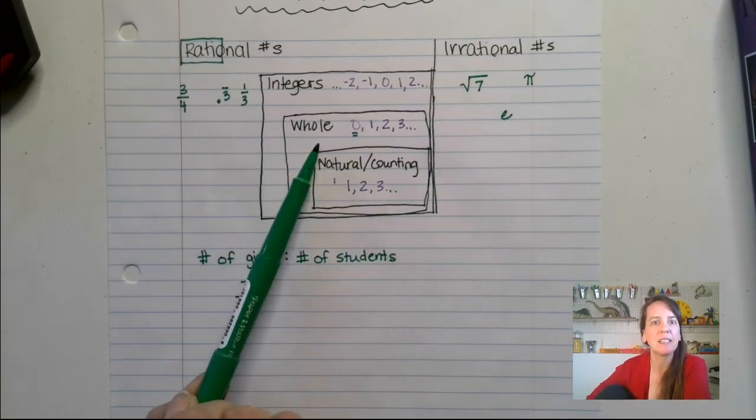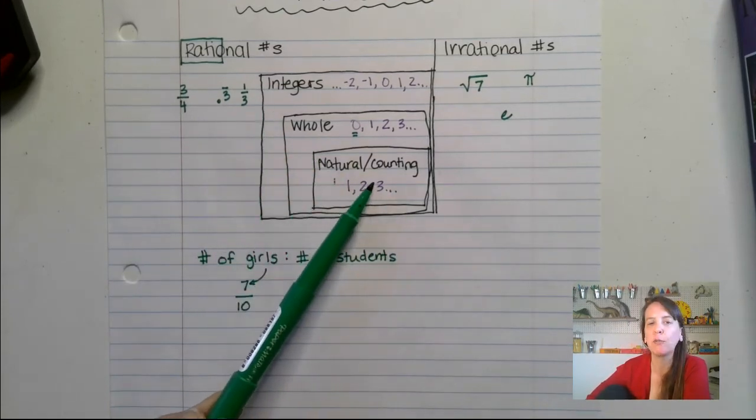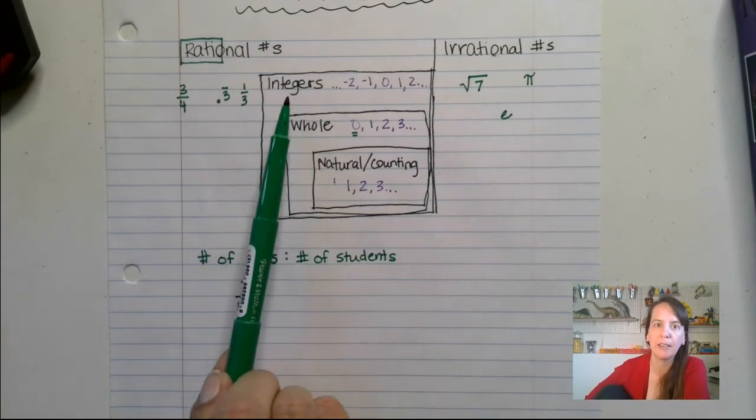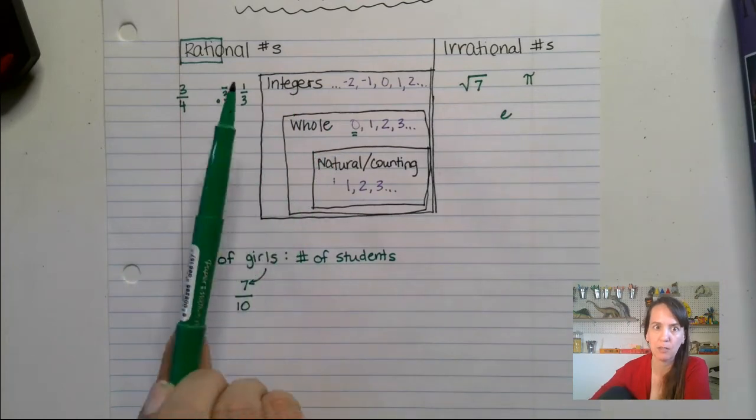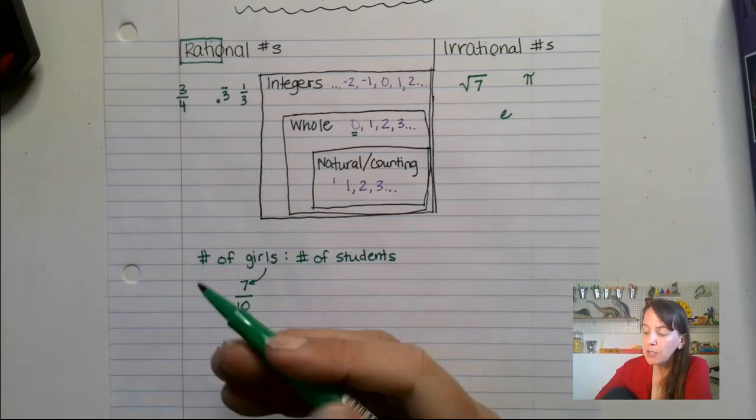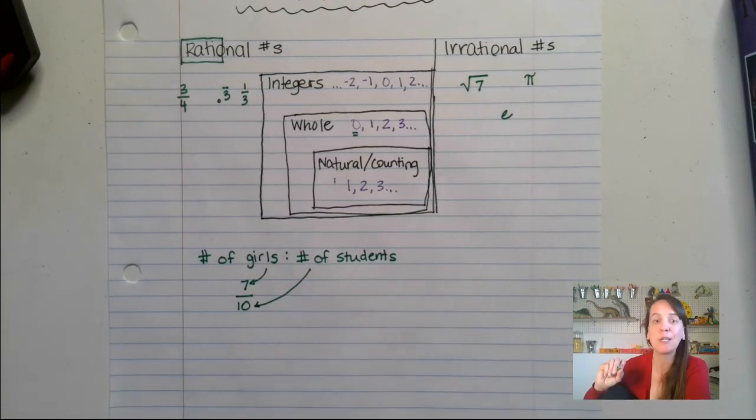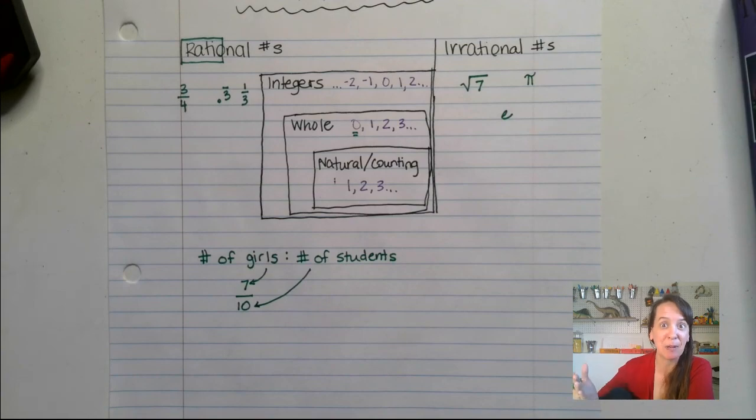So you want to go with the one that is the smallest thing that it is. So if we say it's a natural number, that also means that it's a whole number and an integer, so we don't have to say those two things. So we look at this and say, oh, that's a counting number. Same with 10. The number of students in the classroom is 10, so that would be considered a natural or a counting number as well.